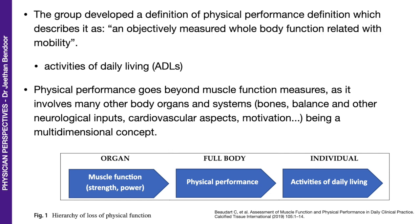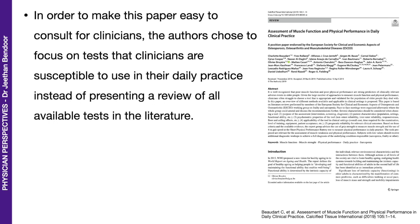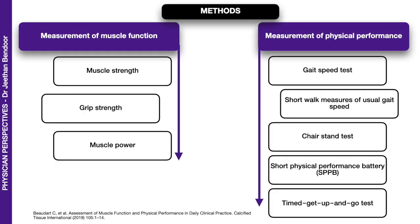To make this paper easy to consult for clinicians, the authors chose to focus on tests that clinicians are susceptible to use in their daily practice. For measurement of muscle function, we look at muscle strength and muscle power — grip strength is part of muscle strength. Measurement of physical performance includes the gait speed test with short walk measure of usual gait speed, chair stand test, short physical performance battery, and timed get up and go test.